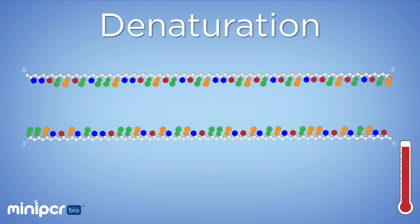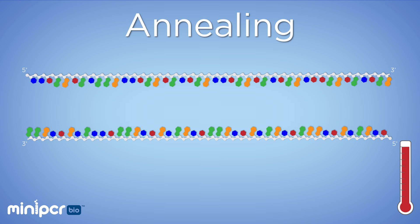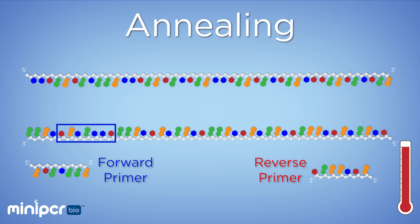In the second step of PCR, we specify the region of DNA to be amplified. We do this using short pieces of DNA called primers. Each reaction will have two types of primers, forward and reverse. The forward primer will match a sequence on one strand of DNA at the beginning of the region we want to amplify. The reverse primer will match the end of the region on the other strand.